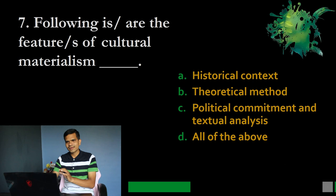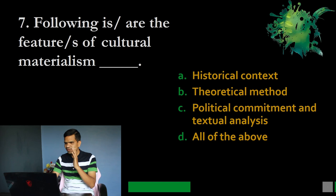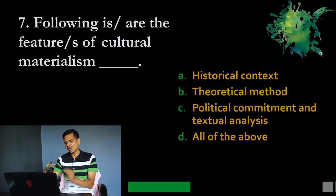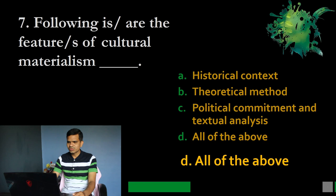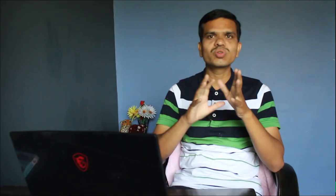Question number 7: Which of the following is or are features of cultural materialism? Options: A. Historical context, B. Theoretical method, C. Political commitment and textual analysis, D. All of the above. The correct option is D, all of the above. These are all features of cultural materialism. Historical context is also taken into consideration while analyzing a text in the light of cultural materialism.